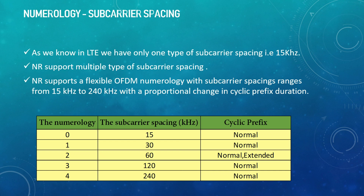The formula is: subcarrier spacing = 2 to the power of numerology, multiplied by 15 kilohertz. So for numerology 0, it is 2 to the power 0 into 15, that is 15 kilohertz. For numerology 1, the subcarrier spacing will be 2 to the power 1 multiplied by 15 kilohertz.